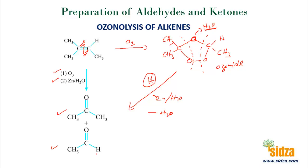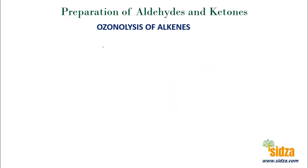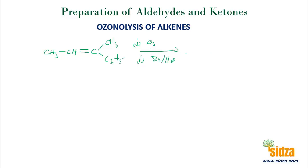Let's take a few more examples of ozonolysis. If you have a molecule like CH3-CH=CH-C2H5, you first react with ozone, then reduce with zinc and water. Breaking the double bond and placing oxygen atoms: on one side you have a carbon with CH3 and H, giving CH3-CHO (an aldehyde); on the other side you have a carbon with CH3 and C2H5, giving CH3-CO-C2H5 (a ketone).